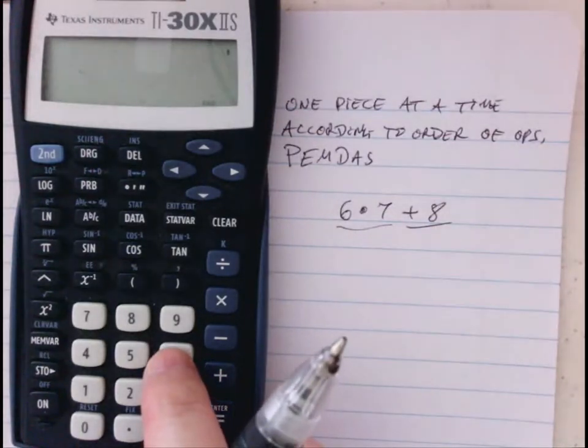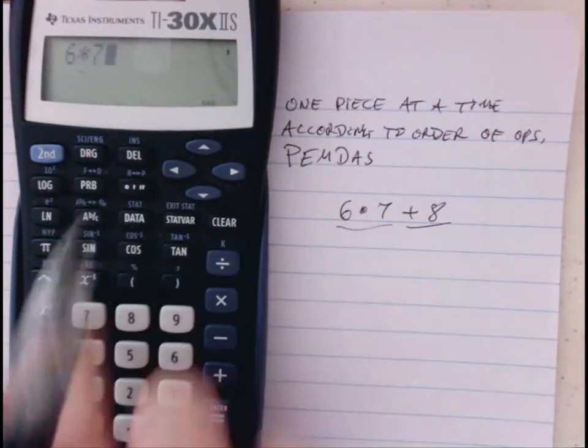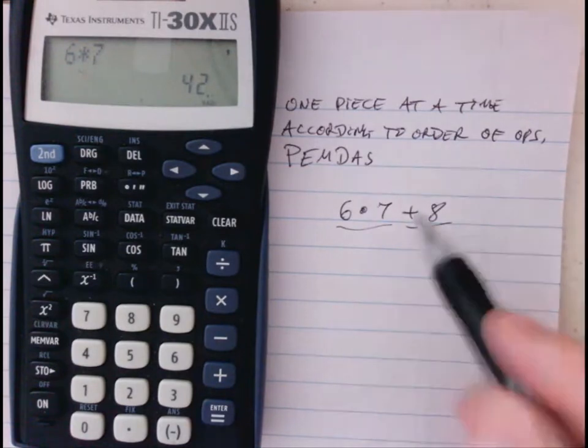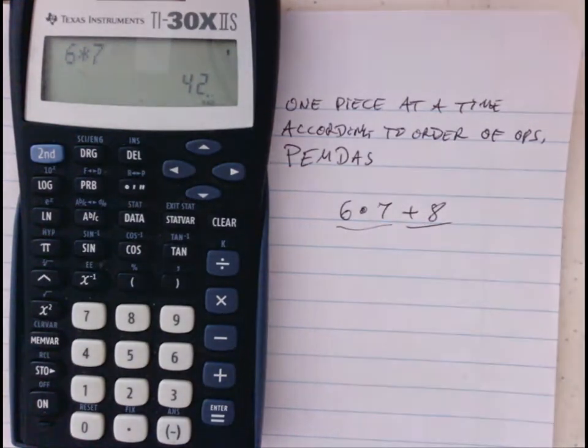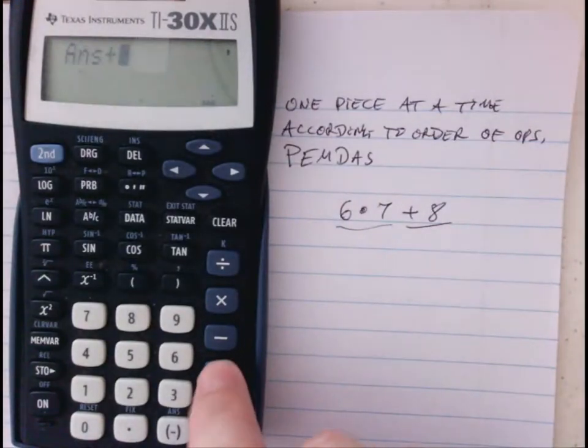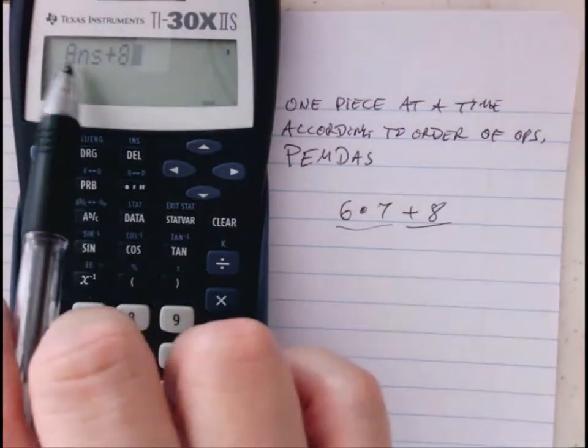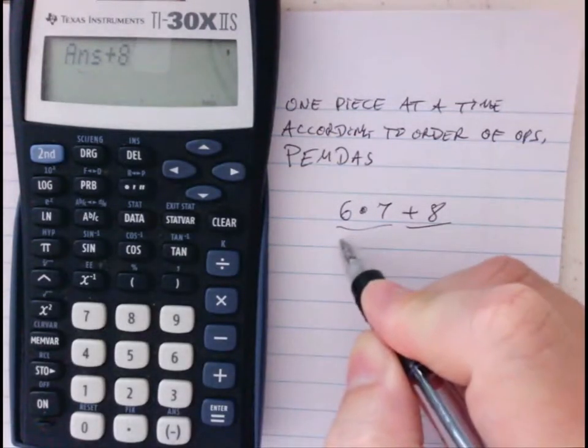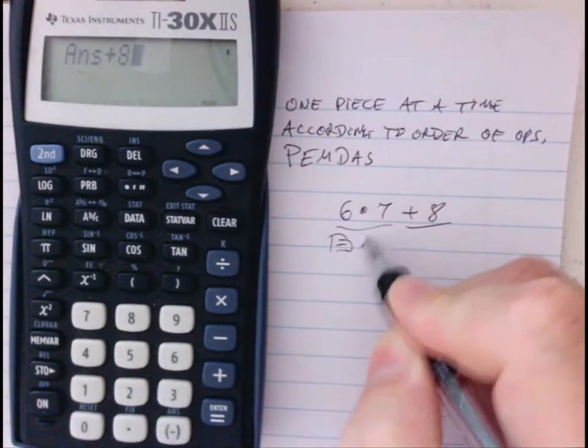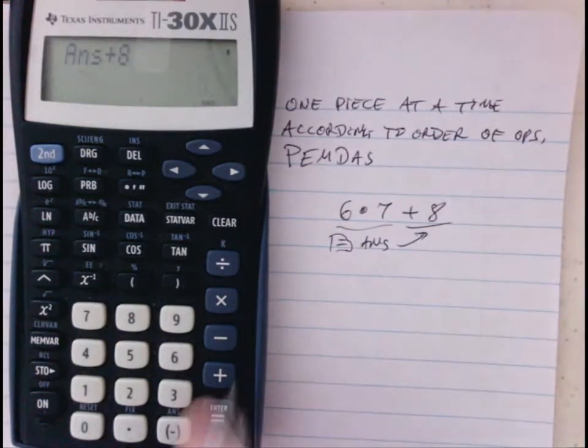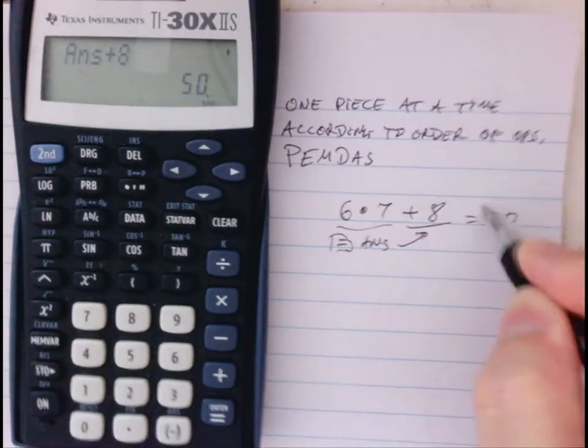I'm going to take 6×7 and hit equal. Six times seven equals 42. I'm not writing it down and I'm going to add 8 to it without re-entering the number 42. I leave the number 42 on the screen and I just hit plus 8. Then it shows previous answer plus 8, then hit the equal symbol. That gets me the final answer of 50.